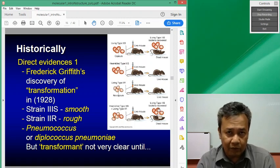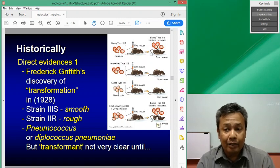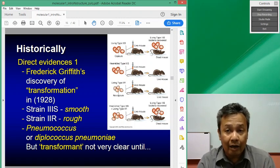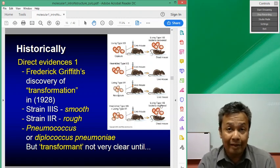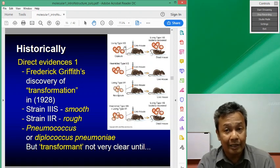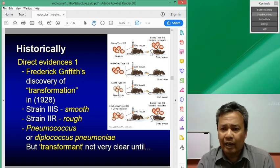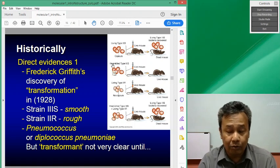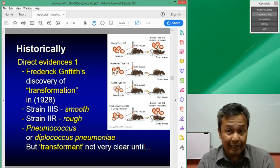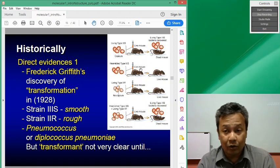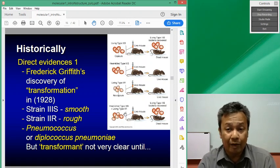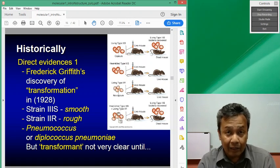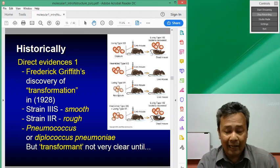One is that the mouse dies. Secondly, you can actually recover type 3S from the dead bacteria. Remember I mentioned earlier, they do not interchange. And if you inject dead 3S alone, it does not live inside the cells. But if you mix dead 3S with living 2R, somehow you can get live 3S.